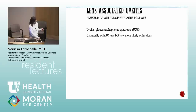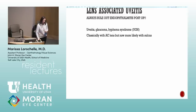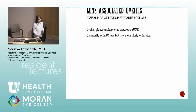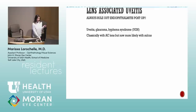Lens-associated uveitis types. UGH syndrome — uveitis, glaucoma, hyphema — occurs with recurrent hyphemas and inflammation; worry about lens position, especially one-piece IOLs placed in the sulcus. Single-piece IOLs should not go in the sulcus. You can treat the inflammation with steroids but it typically recurs, so lens repositioning is often needed.